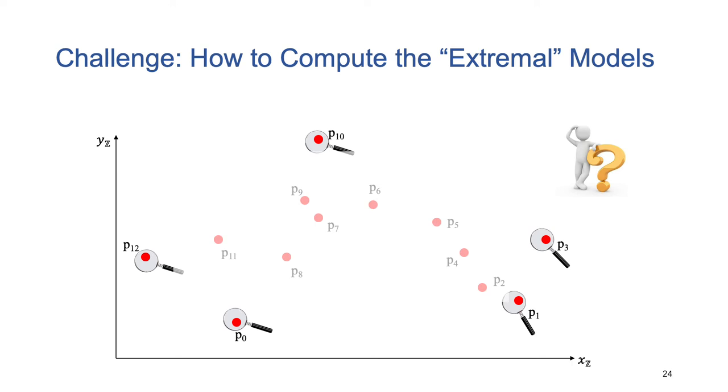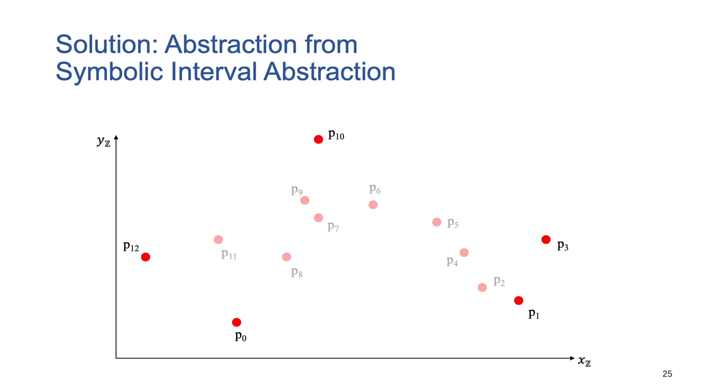Now, here's the key challenge. How can we automatically compute such extreme models? We only see a formula, and all these models are implicit.